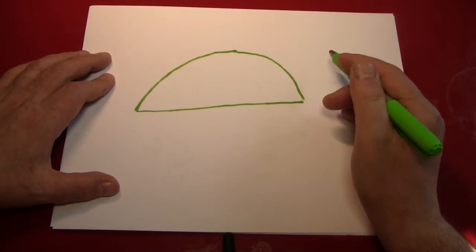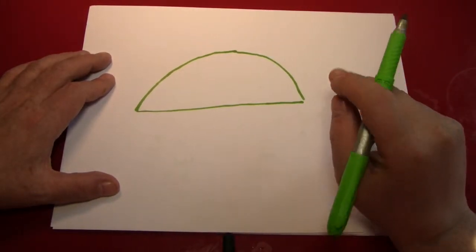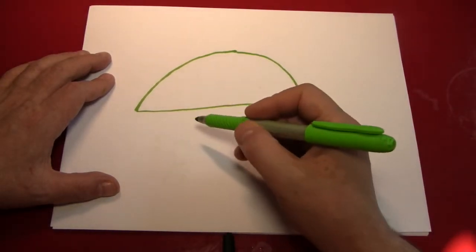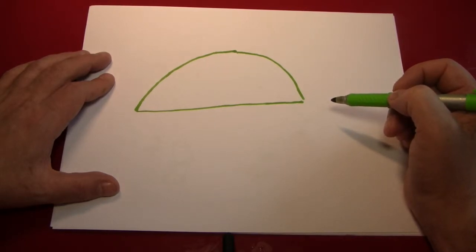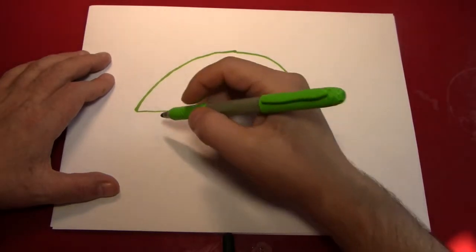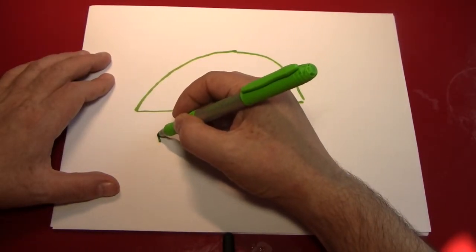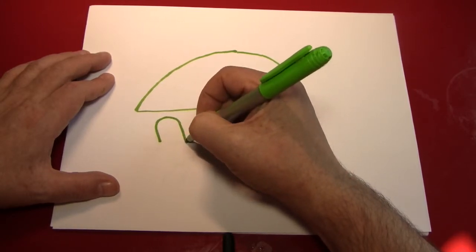Next, what we're going to do is we're going to draw some legs. Now, unlike turtles, tortoises are land animals and have thick, stocky legs, kind of similar to elephants, I guess. Let's draw one. What I suggest to do is make an upside-down U, a fairly good-sized one, right about here.